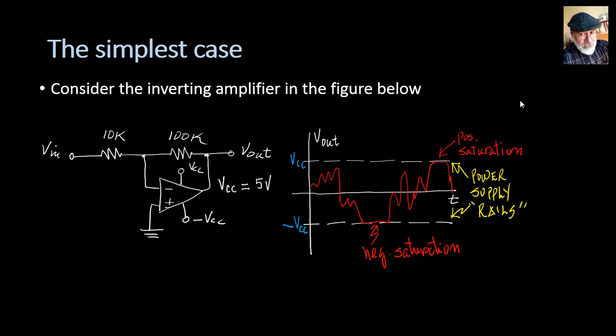This inverting amplifier has a voltage gain of negative 10. It's negative 100k divided by 10k, negative 10. So that Vout is negative 10 times Vin, or the same, Vin is negative 0.1 times Vout, one tenth of Vout with a change of sign.